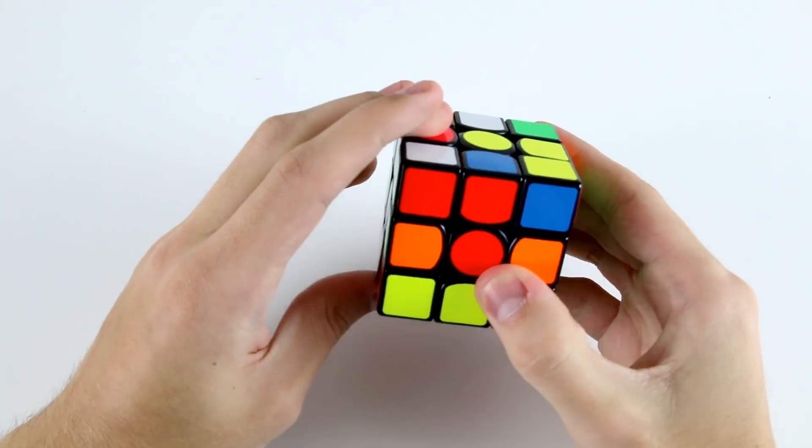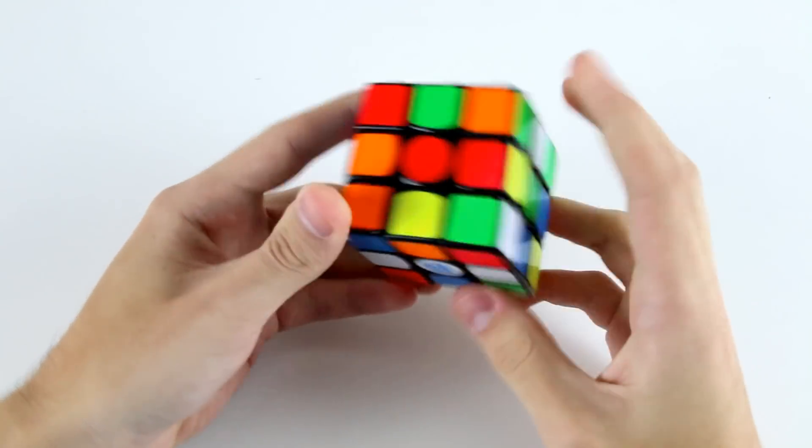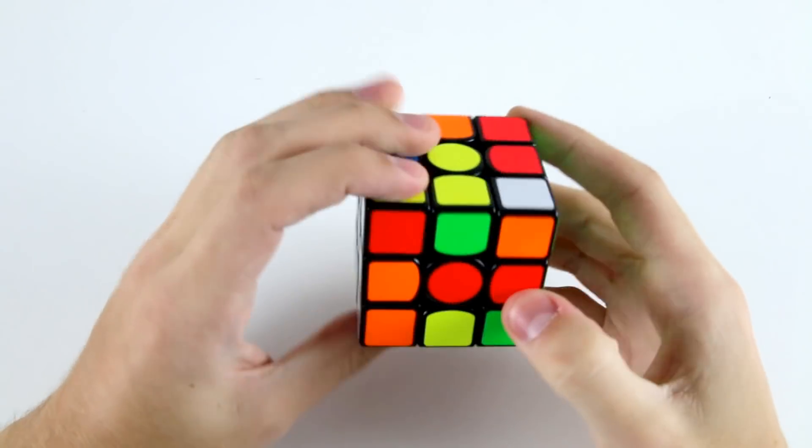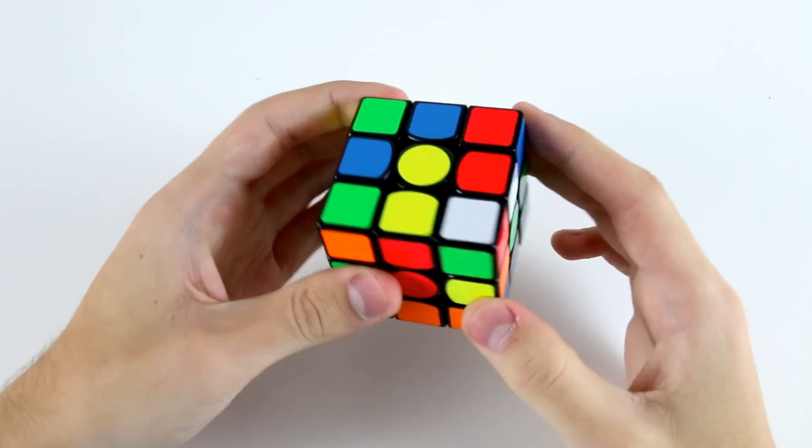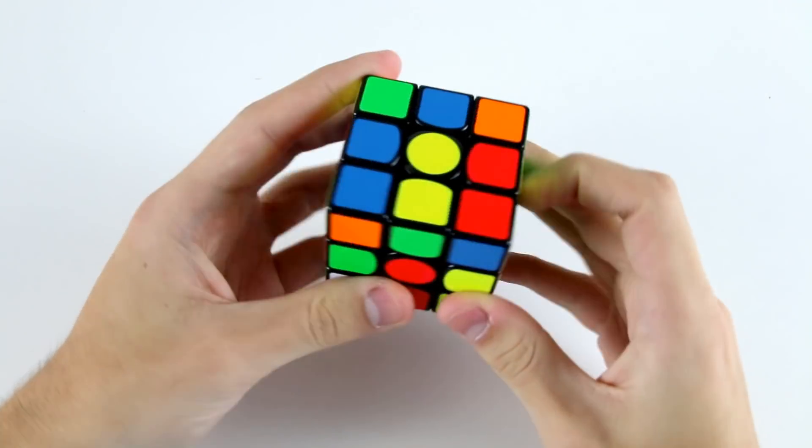I can do something like L'U R2 and then I've got this block here and this edge so I can go F'B2 like that, then D2 and then insert my last cross edge there.